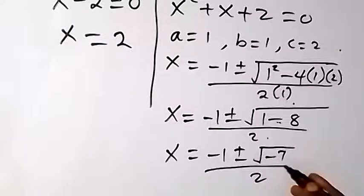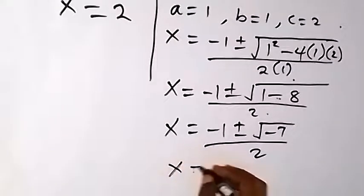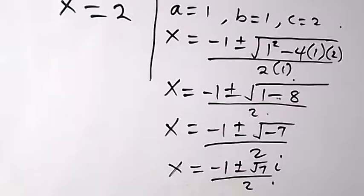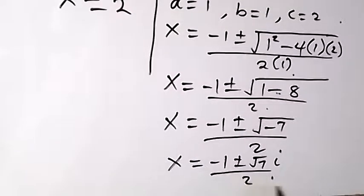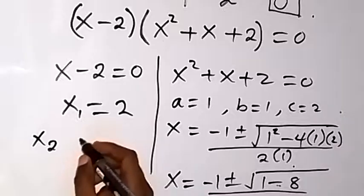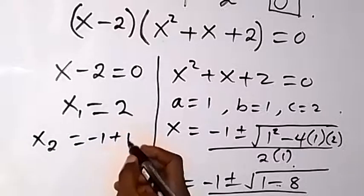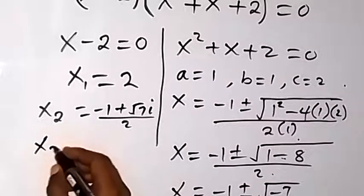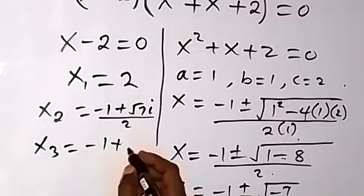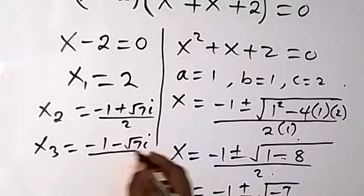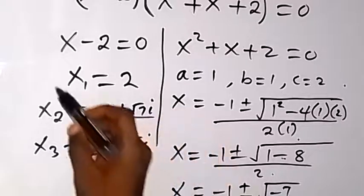This gives us x equals minus 1 plus or minus square root of minus 7, over 2. Since the square root of minus 1 equals i, we can write this as x equals minus 1 plus or minus square root of 7 times i, over 2. These two roots are complex numbers, while x equals 2 is the real root.